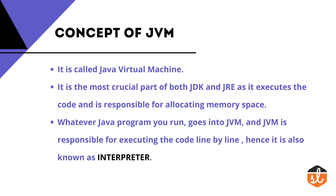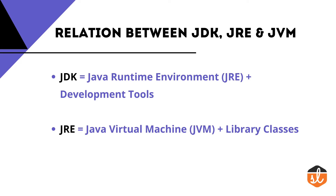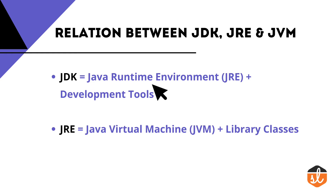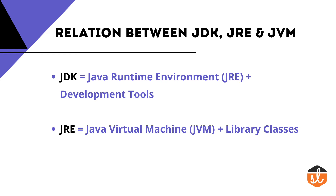Now let's see the relationship among JDK, JRE, and JVM using formulas. JDK equals JRE plus development tools. JRE equals JVM plus library classes. With the second formula, you can see that JVM is a part of JRE. If we substitute the formula of JRE into the JDK formula, we get: JDK equals JVM plus library classes plus development tools. From this, you can also see that JVM is a part of JDK.